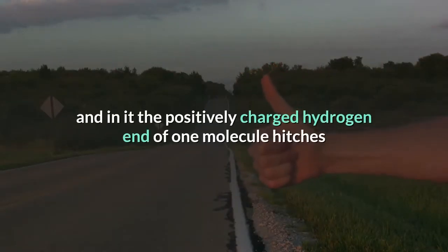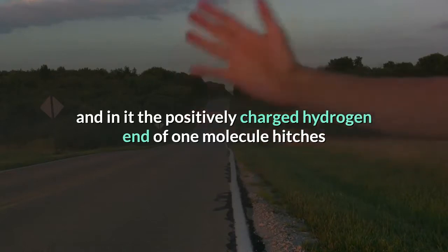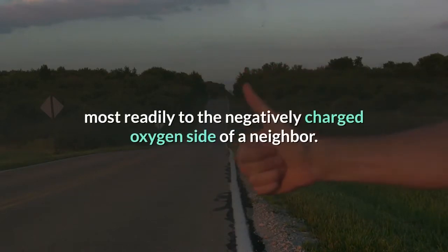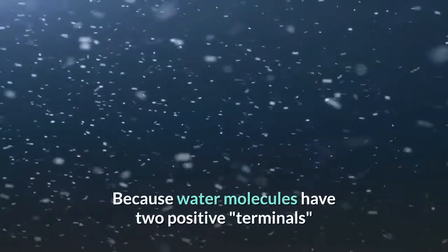In a hydrogen bond, the positively charged hydrogen end of one molecule hitches most readily to the negatively charged oxygen side of a neighbor. Because water molecules have two positive terminals and only one negative terminal, they join together to build specific patterns.